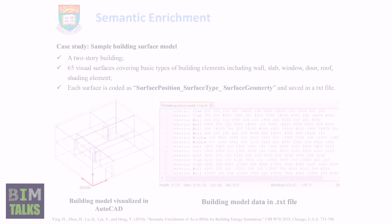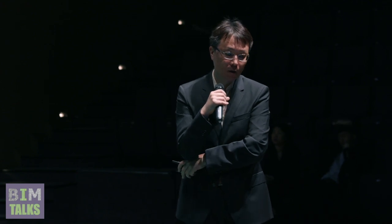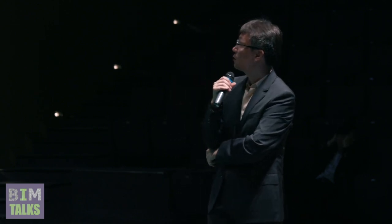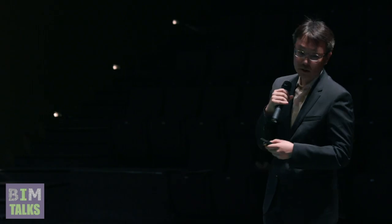Based on this method, we tested it with a simple two-story building that has 65 virtual surfaces covering fundamental building elements such as walls, windows, doors, roofs, and some shading elements. The results showed quite accurate and promising outcomes, so we can use this for energy analysis.